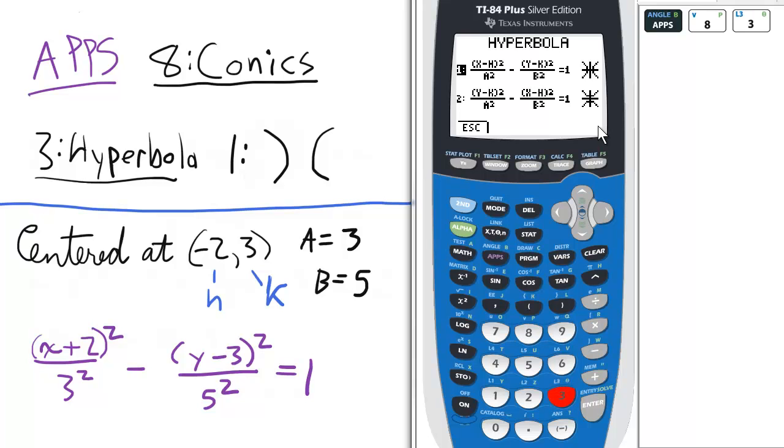The first one is a horizontal transverse axis, or horizontal focal axis, or an x-transverse axis. Different ways of saying the same thing.